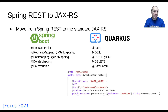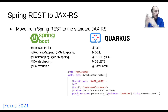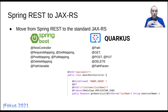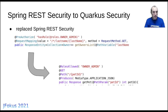For Spring REST, it's mostly a string replacement — moving to JAX-RS by replacing one annotation with another. The only exception is @RequestMapping, which contains three elements in one annotation that need to be broken down into separate JAX-RS annotations. But overall it was very easy.